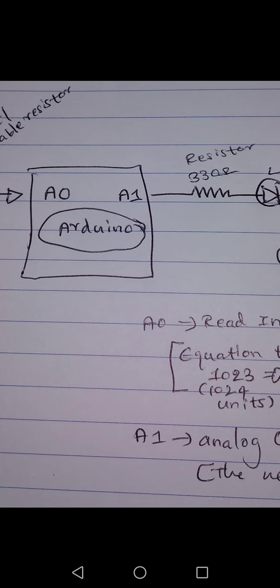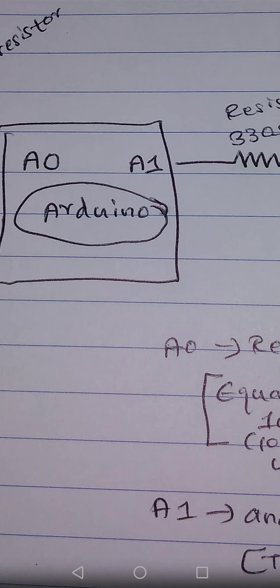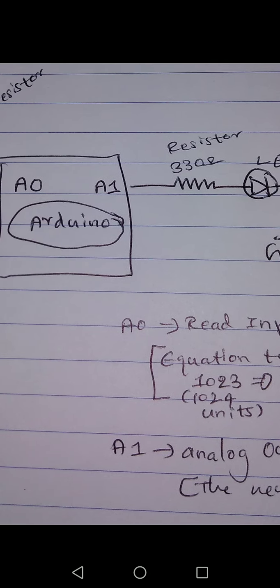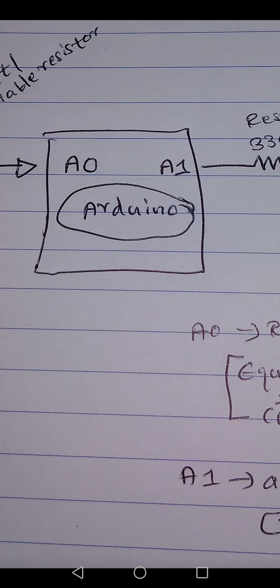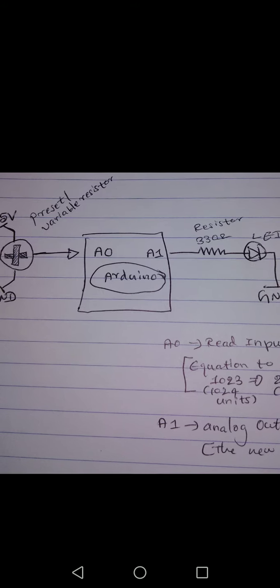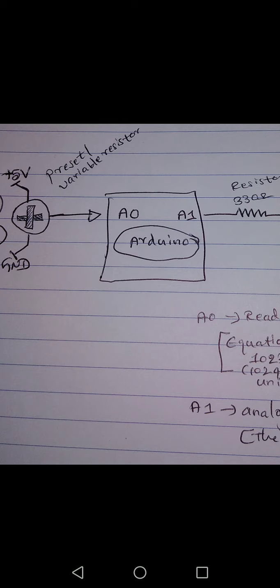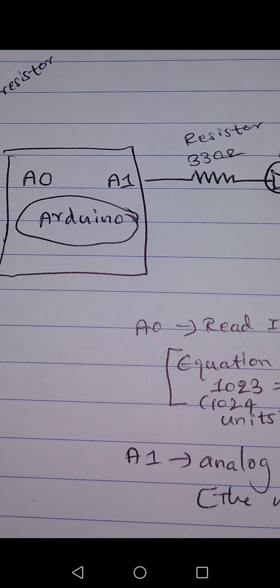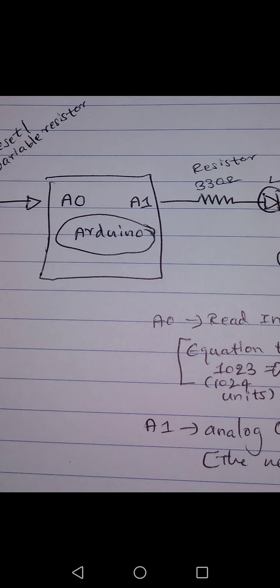We connect the LED to another analog pin — pin A1. So A0 is the input and A1 is the output. The LED is connected with a 330 ohm resistor and is grounded. Now, how do we map A0's input to A1's output? The problem is that the input value goes up to 1023, but the analog output value can only go up to a maximum of 255, so you cannot directly replace one with the other.